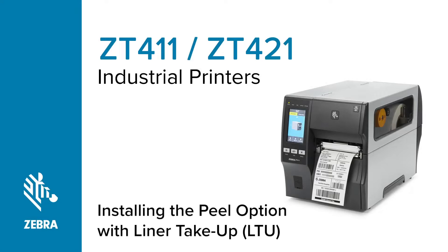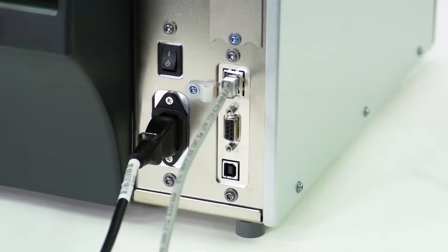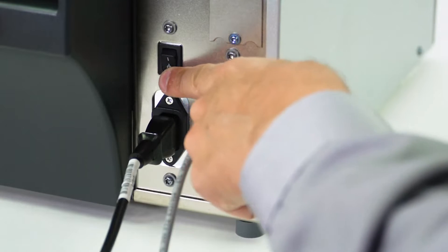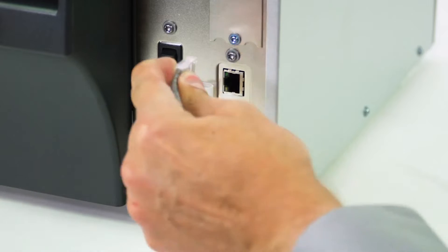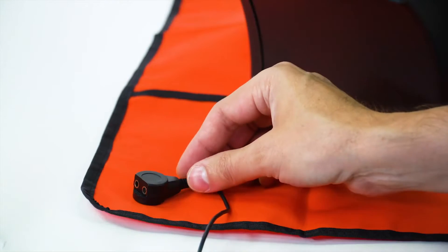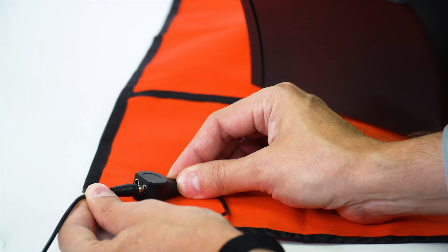Installing the LTU option on a ZT411 series printer. Turn off the printer and disconnect the power cord and data cables. Connect yourself to an anti-static device. Place the printer on a grounded anti-static mat.